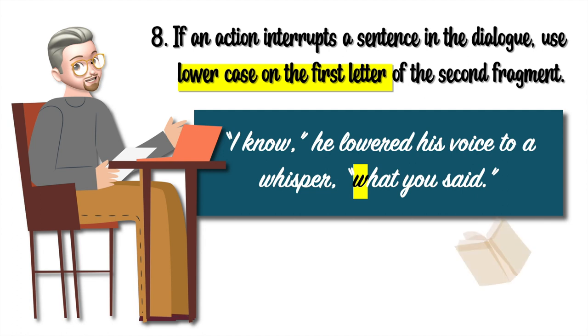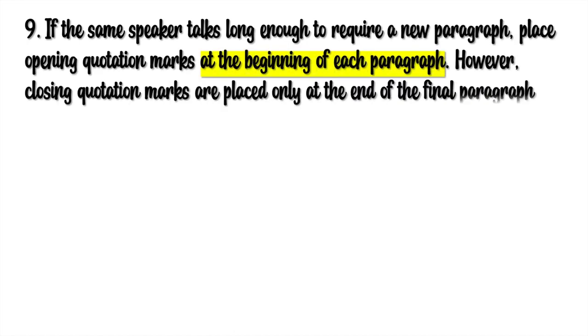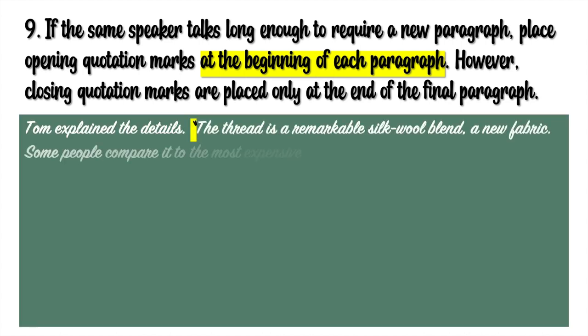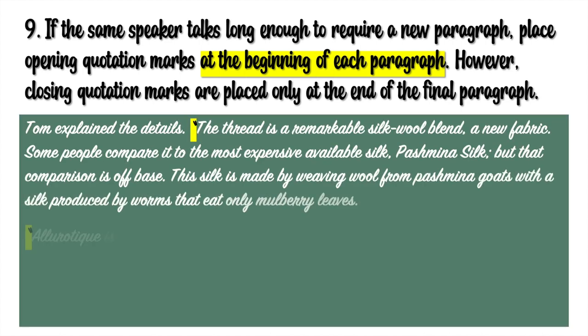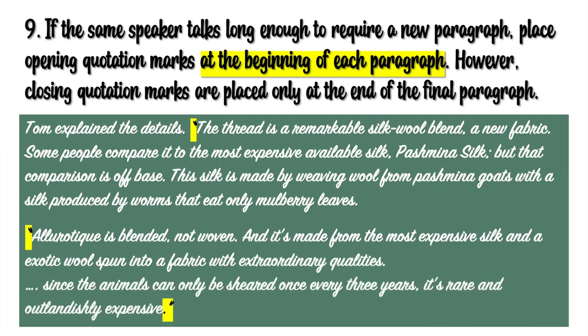Rule number nine: If the same speaker talks long enough to require a new paragraph, place opening quotation marks at the beginning of each paragraph. However, closing quotation marks are placed only at the end of the final paragraph. Tom explained the details. Quotation marks open, then there is a break, another paragraph with opening quotation marks — so we didn't close the quotation marks in the first paragraph. And at the end of that final paragraph, we closed his dialogue with a closing quotation mark.